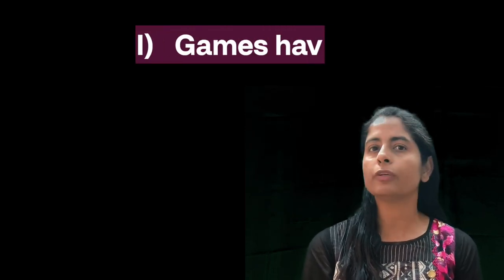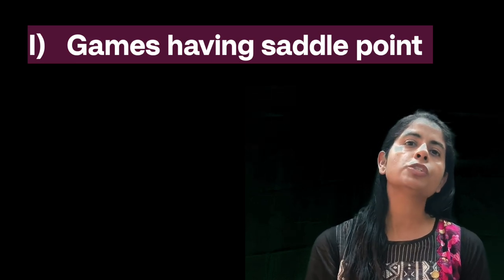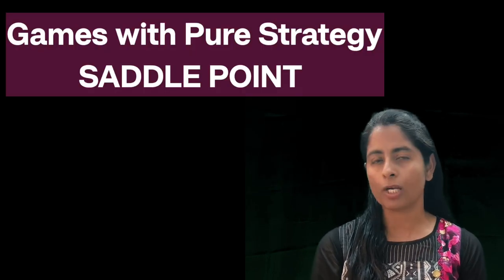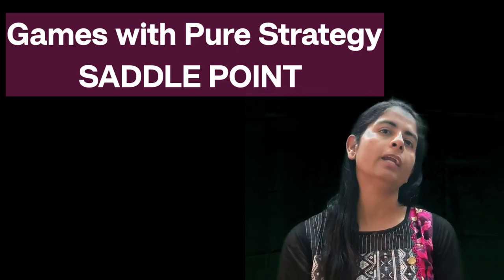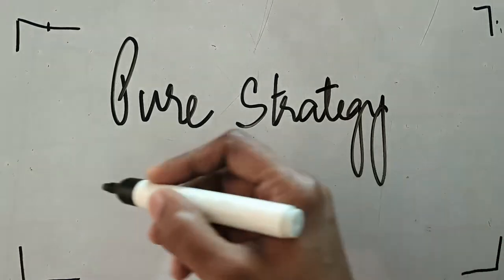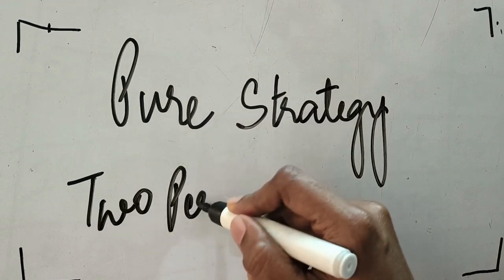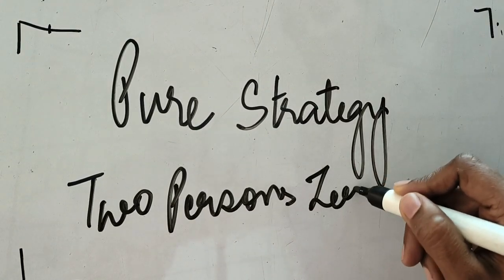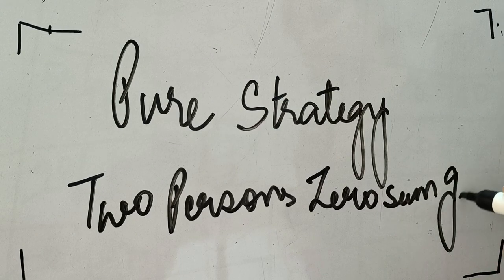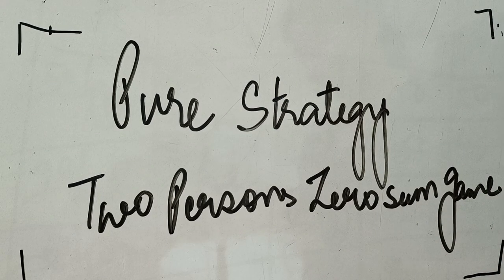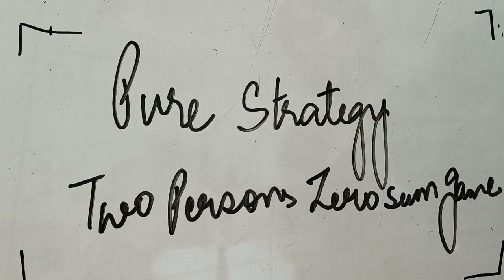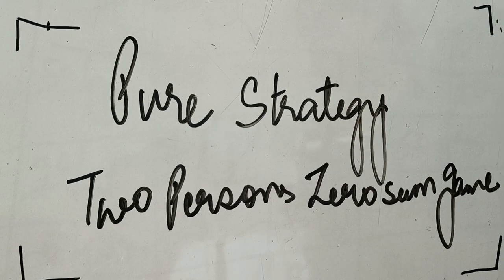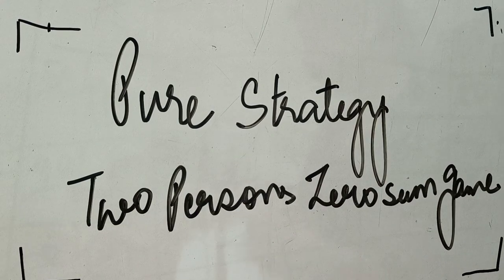We will start with the first method of game theory — games with pure strategies — and how we can use the maximin and minimax principle. Games with pure strategies are also known as two-person zero-sum games. We try to find the saddle point, which is determined using row minima and column maxima. That is why this is also known as the minimax equals maximin principle.